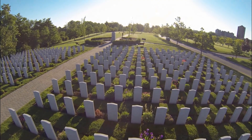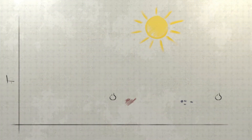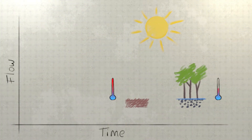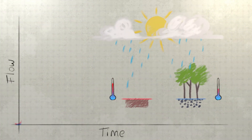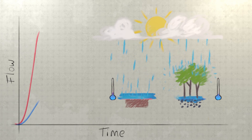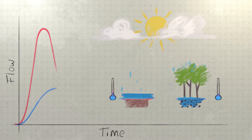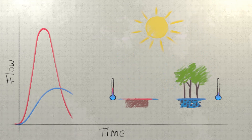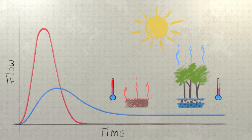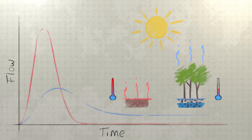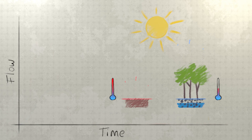This is a graph of water flow over time, showing you what the concreted landscape does to water flow versus what the rich vegetated landscape can do. This is the same amount of water, but showing how long it sticks in the system.